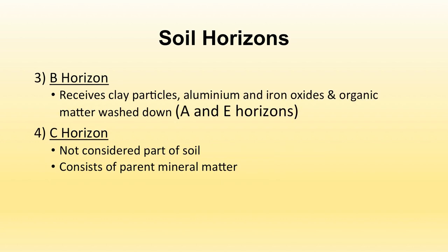The third layer is B horizon. It receives clay particles, aluminium and iron oxides, and organic matter from the E horizon above. All these materials — iron oxides, organic matter, and fine clay particles — get accumulated in the B horizon. The fourth is the C horizon, which is not considered part of the soil because it consists of parent mineral matter.